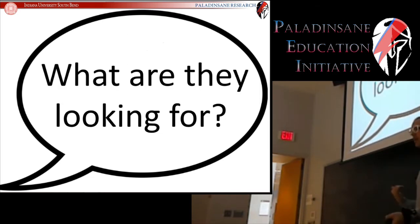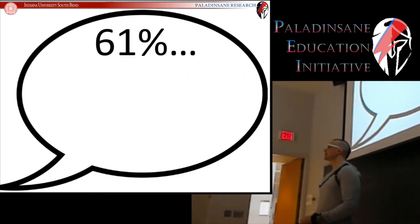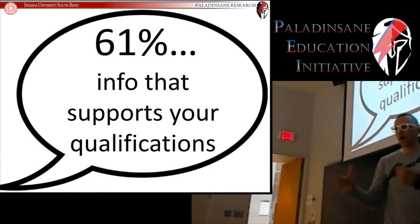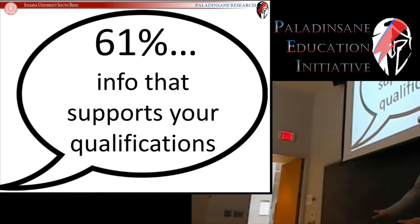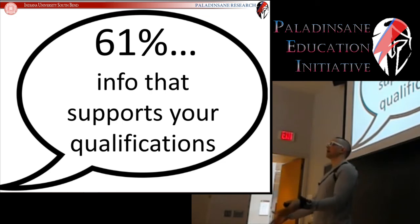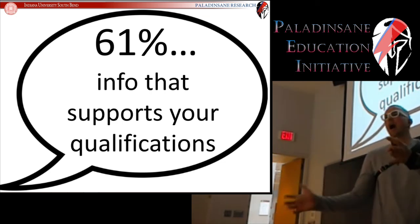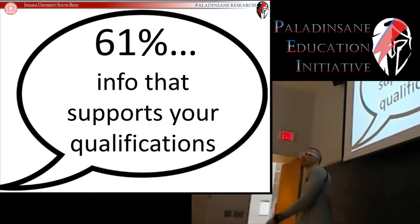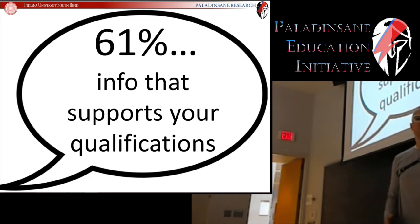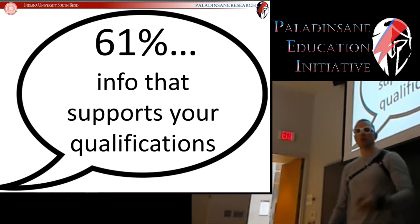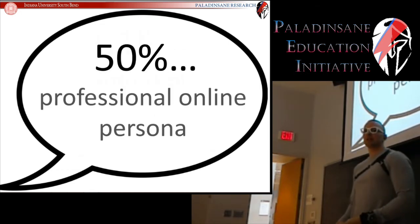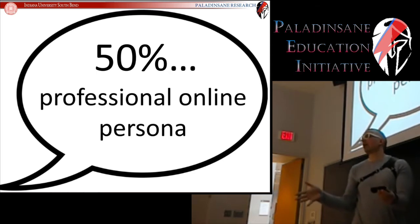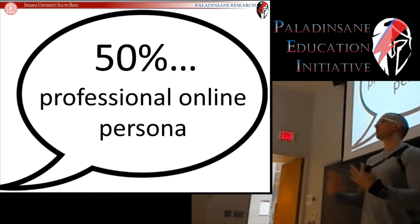So what was it that they were looking for? In this survey, 61% said they want to see information that supports your qualifications. So if you say that you are passionate about psychology, they want to see your social media profile that indicates yes, I am passionate about psychology. If you say you have skills with Excel, they would want to see social media posts that confirm that. We want to develop a social media presence that will support your qualifications. 50% said that they are looking for a professional online persona.